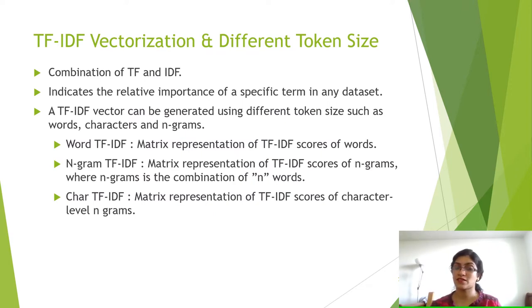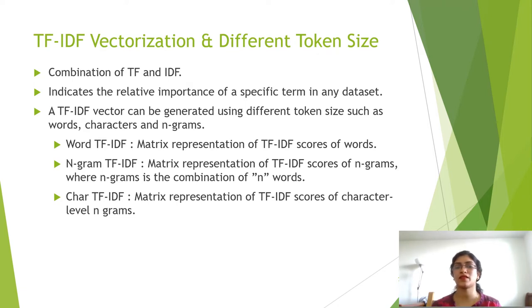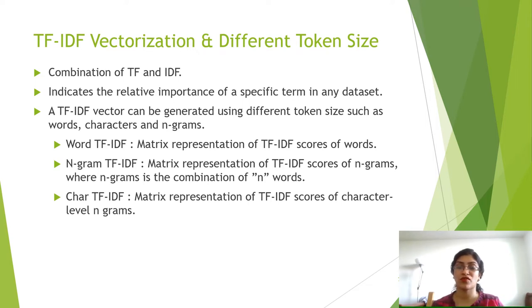This slide explains the different TF-IDF vectorizations and how different granularities can be captured using different token sizes. TF-IDF is a simple and proven method for text classification. Instead of simply counting words, which would overemphasize frequent words, each word is weighted by its relative frequency. TF-IDF features inform the model if a word appears more often in a comment than usual in the whole corpus.